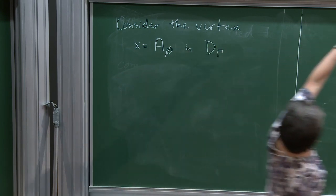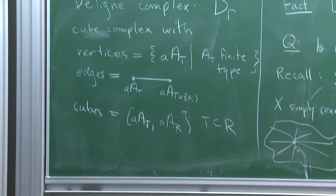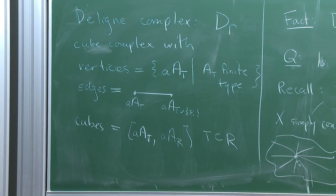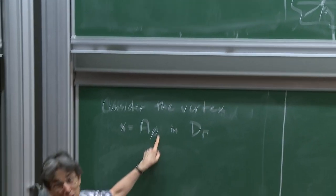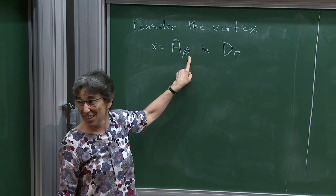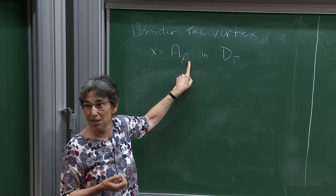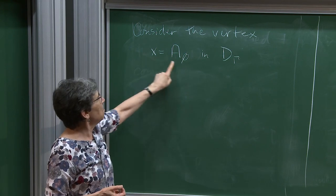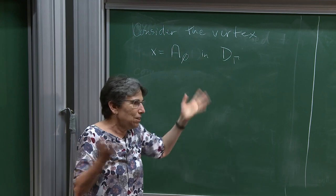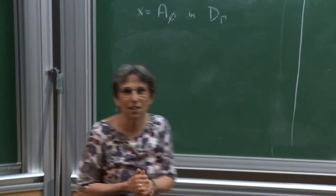Consider the vertex X corresponding to A(∅) in D(γ). A(∅) is the trivial group — about as finite type as you can get. I'm taking T to be the empty set, and that is a vertex in D(γ). It's not the only kind of vertex, but let's look at that one carefully.